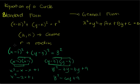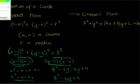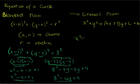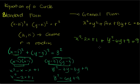So basically, x minus 1 squared expands to x squared minus 2x plus 1, and y minus 3 squared expands to y squared minus 6y plus 9. Combining these, we have x squared minus 2x plus 1 plus y squared minus 6y plus 9 equals 9. We can combine the constant terms 1 and 9, giving us x squared minus 2x plus y squared minus 6y plus 10 equals 9.